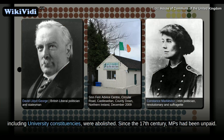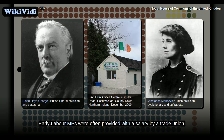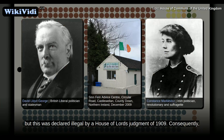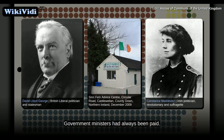Since the 17th century, MPs had been unpaid. Most of the men elected to the Commons had private incomes, while a few relied on financial support from a wealthy patron. Early Labour MPs were often provided with a salary by a trade union, but this was declared illegal by a House of Lords judgment of 1909. Consequently, a resolution was passed in the House of Commons in 1911 introducing salaries for MPs. Government ministers had always been paid.